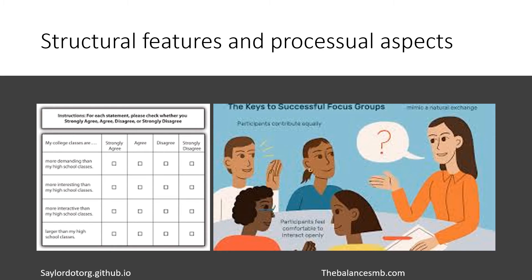Quantitative research is especially efficient at getting at the structural features of social life, whereas qualitative studies are usually stronger in terms of the processorial aspects. This means that qualitative study helps us understand why something is happening. Quantitative tells us what is happening — the structure, people's perceptions — but to get deeper and understand the process and thinking behind it, you go deeper into the qualitative process.